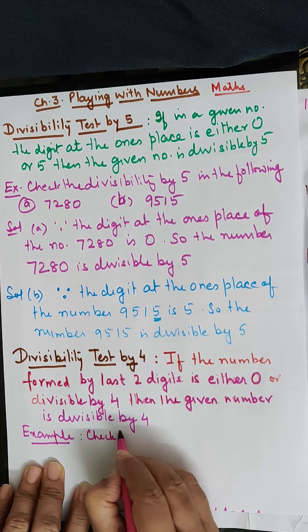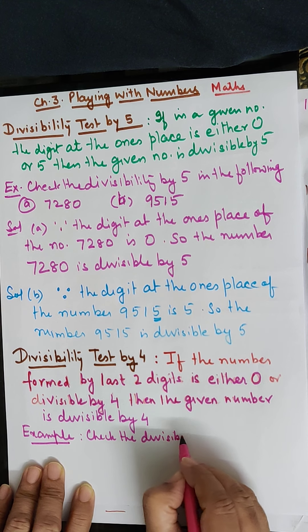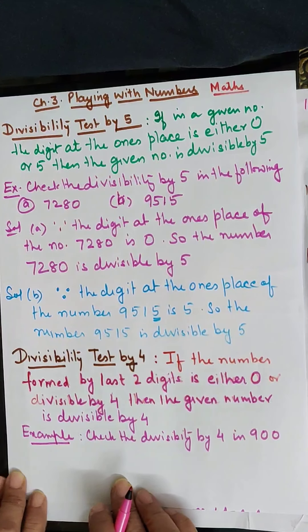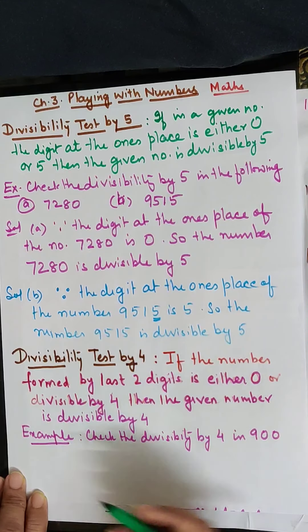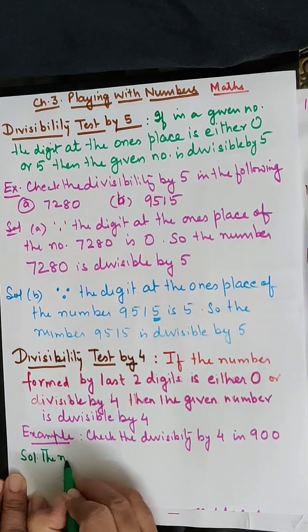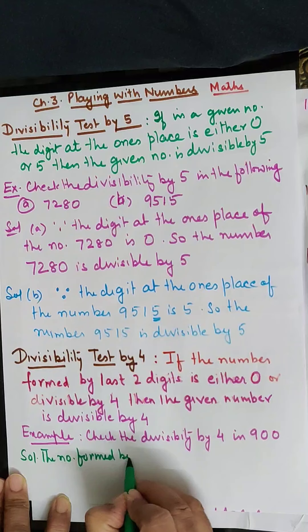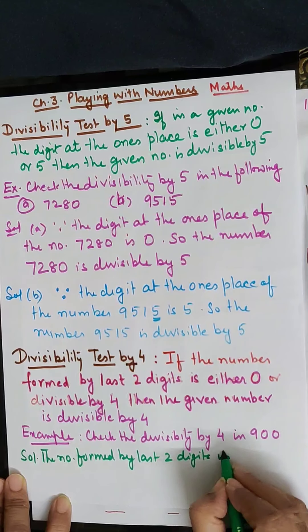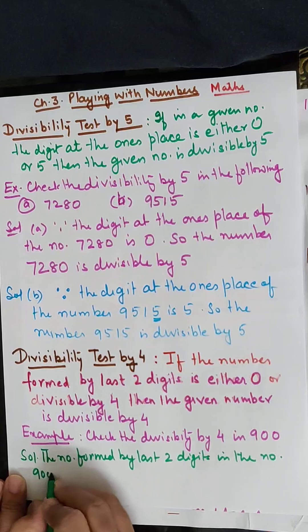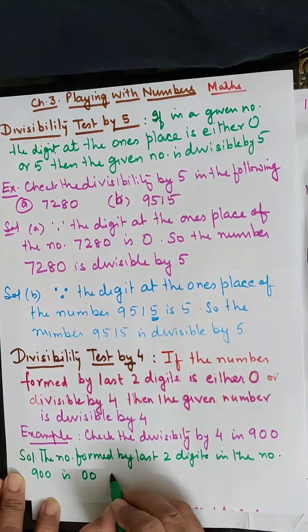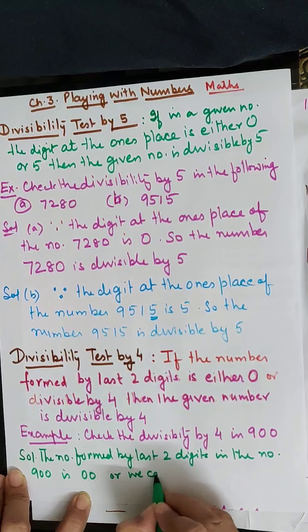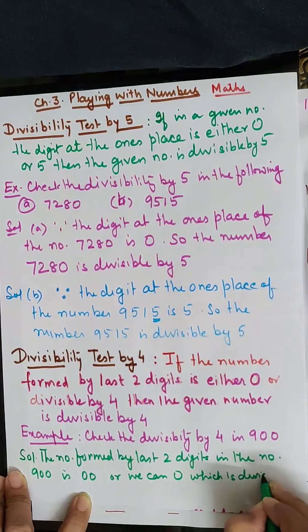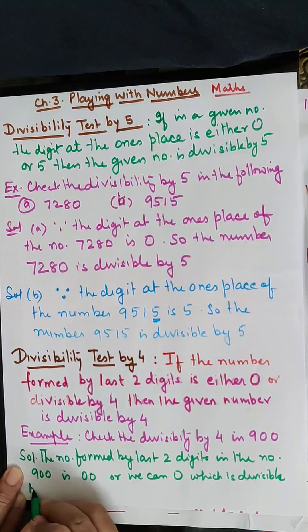For example, check the divisibility by 4 in 900. The number formed by the last two digits of 900 is 00, which we can say is 0. And 0 is divisible by 4.